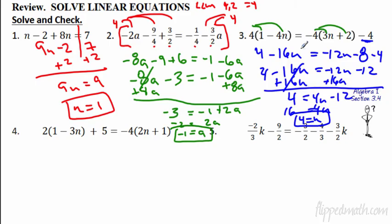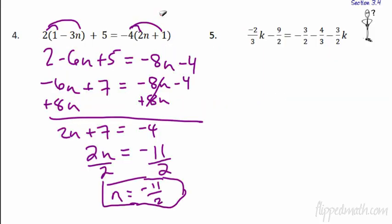I want you to do numbers 4 and 5 — pause the video. For number 4, after distributing both sides we get 2 minus 6n plus 5 equals negative 8n minus 4. Combining like terms: 7 minus 6n equals negative 8n minus 4. Add 8n to each side to get 2n. The 7 comes down; equal sign stays; you get negative 4. Subtract 7 from each side: negative 11. Divide by 2: you get negative 11 halves.